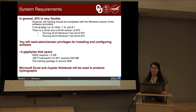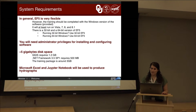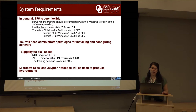What are the system requirements for EF5? In general, EF5 is very flexible. However, the training should be completed with the Windows version of the software, as that's what's provided and shown in the videos. It will run on Vista, 7, 8, and 8.1. There is a 32-bit and a 64-bit version of EF5 — use the one matching your Windows version. You'll also need administrator privileges for installing and configuring the software, and about 5 gigabytes of disk space: QGIS requires about 1.2 gigabytes, the .NET Framework 3.5 SP1 requires 500 megabytes, and the training package is about 3 gigabytes.